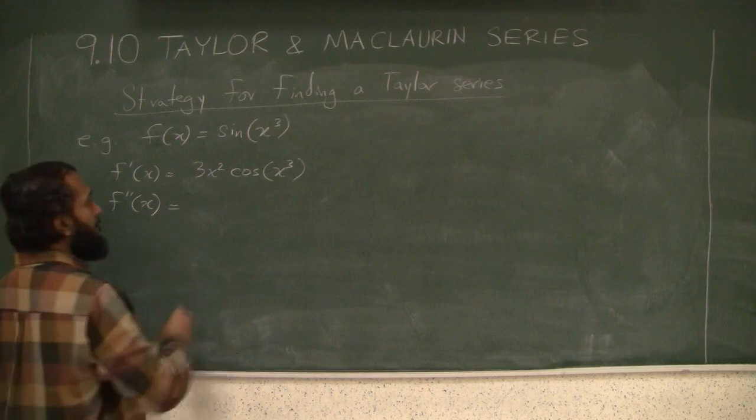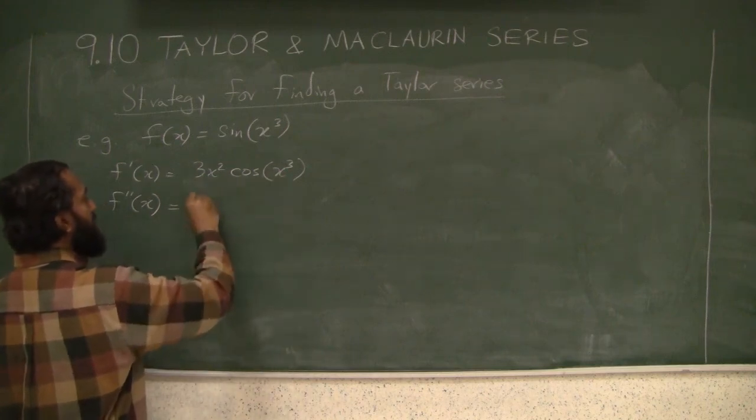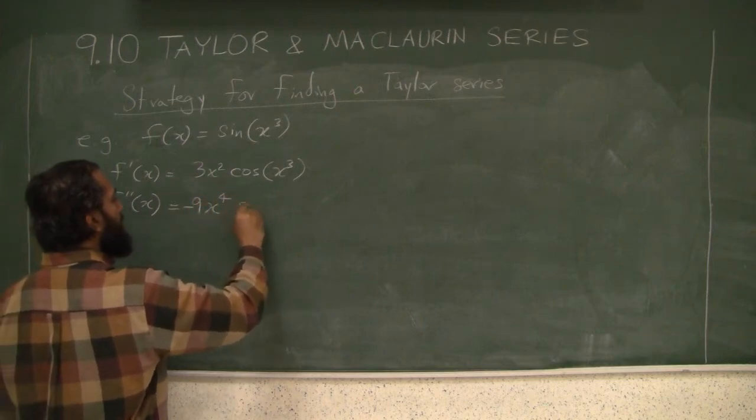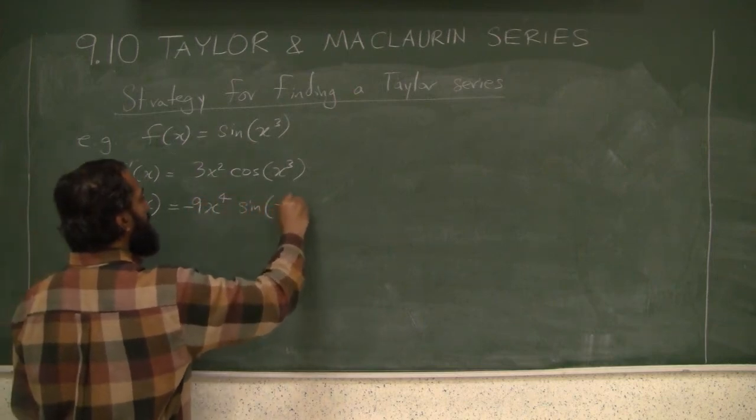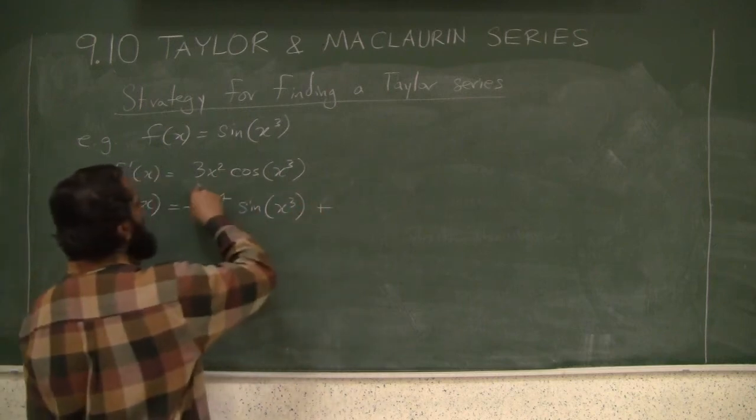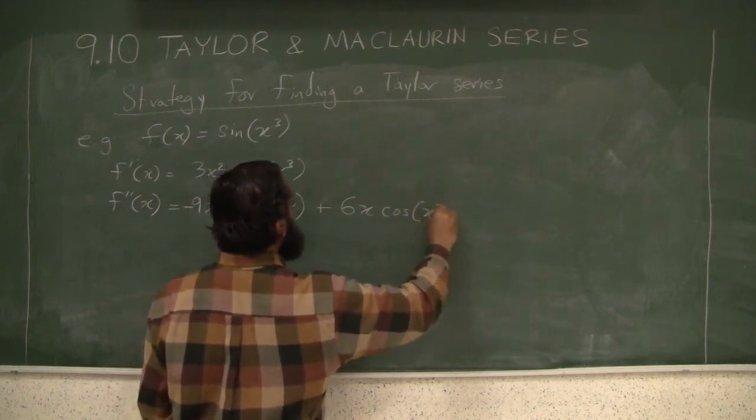You have negative sine of this, another 3x is going to come out: -9x⁴sin(x³) + 6x·cos(x³).